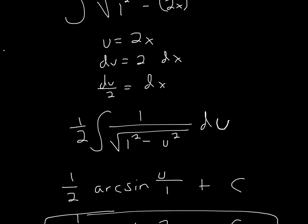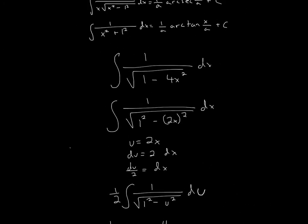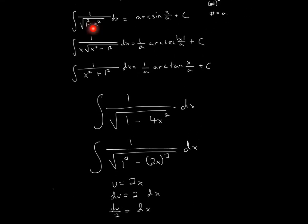So du and then 1 half, because I'm just pulling out a 1 half from the du. And then I said u is equal to 2x, so it's going to be 1 squared minus u squared. Now since it's in the same form as this, the letter doesn't matter. All that matters is the form. So since the form is the same, I can use this solution.